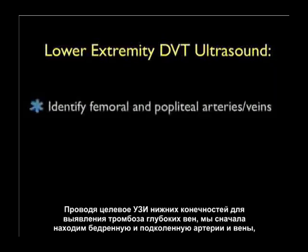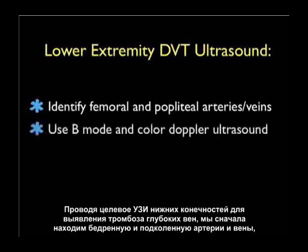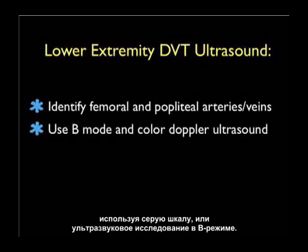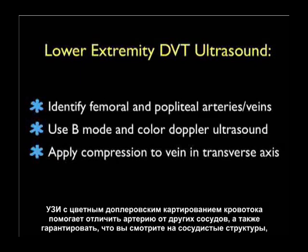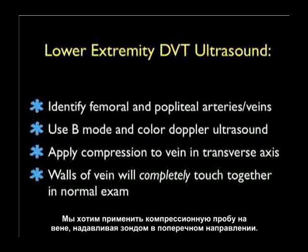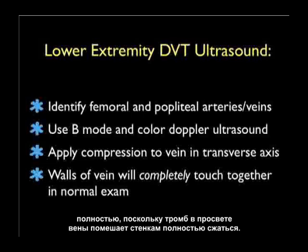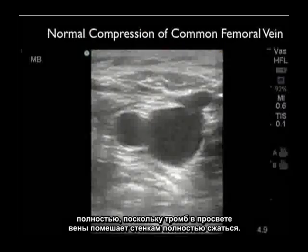When performing the focused lower extremity DVT ultrasound examination, we first identify the femoral and popliteal arteries and veins using B-mode or grayscale sonography. Color flow Doppler can be helpful in differentiating artery from vein, but most of our information will come from B-mode sonography. We apply compression to the vein pressing down with the probe in the short axis or transverse orientation. In a normal examination the walls of the vein will completely touch together; if a DVT is present, a thrombus within the lumen will prevent the walls from completely collapsing.